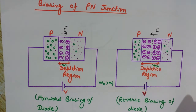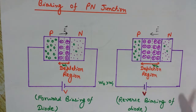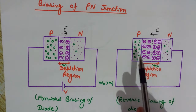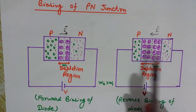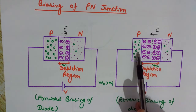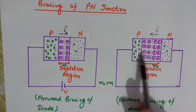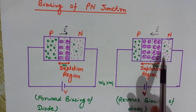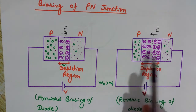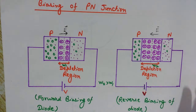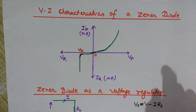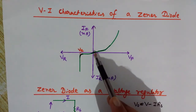If we increase doping, the diode will break down at lower voltages. This is the concept used in the zener diode — we increase the doping level, so we have more charge carriers and it becomes more conductive. Because of this, the depletion region width decreases and it breaks down at very low voltages compared to a normal diode.